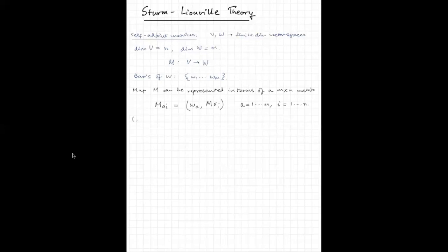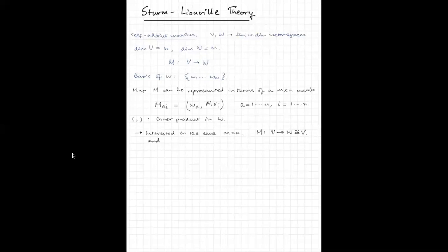That bracket denotes the inner product in W. Now we will be interested in the case m equal to n, so this is a square matrix and the map is an isomorphism — meaning M goes from V to V, and the map is an isomorphism.